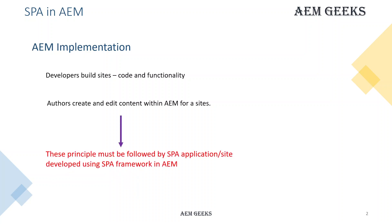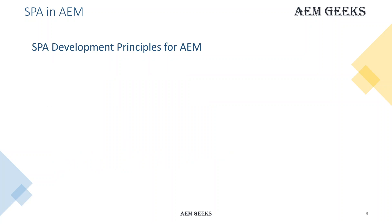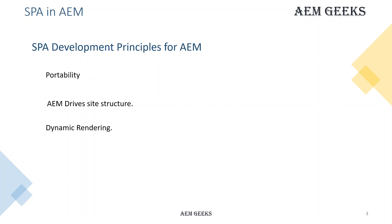These two basic principles must be followed for SPA as well. There are some development principles for SPA to be implemented: portability — your component should be portable and reusable enough to reuse site structure. Your SPA single page application site structure should be as per a normal AEM site, and content authoring should be performed as a normal site for SPA application as well. Your content should be stored in the repository.